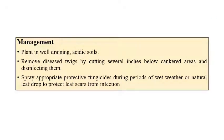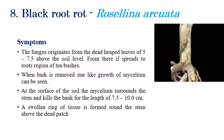For management of twig dieback or stem canker, plant in well-drained acidic soils, remove and burn affected twigs and cankers, and disinfect them. Application of protective fungicides is recommended, especially at natural leaf drop or upon appearance of disease symptoms. Systemic fungicides should be applied when disease symptoms are observed.